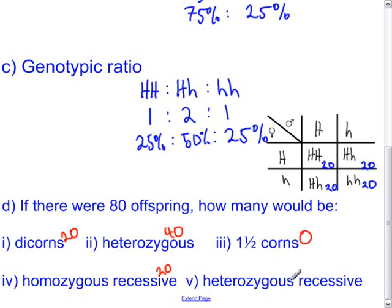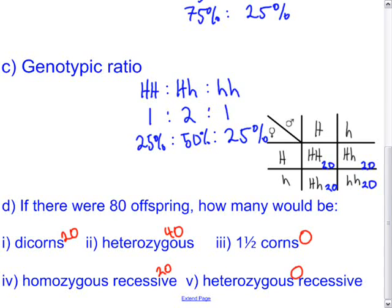How many are heterozygous recessive? These terms don't make sense together — if you are heterozygous, you take after the dominant trait. You have both forms of the gene, dominant and recessive, but you cannot be heterozygous and show the recessive trait. So this is also a trick question, and the answer is zero. That is the last question for this example.